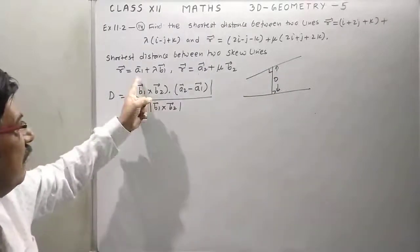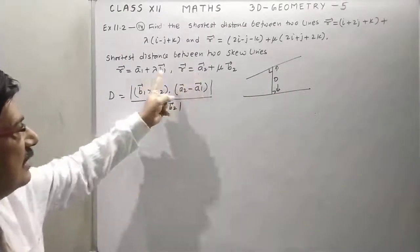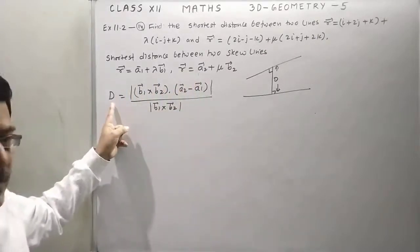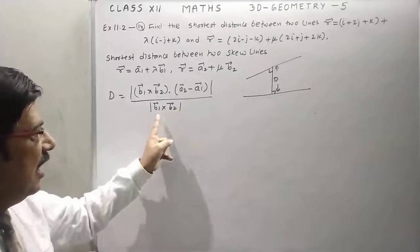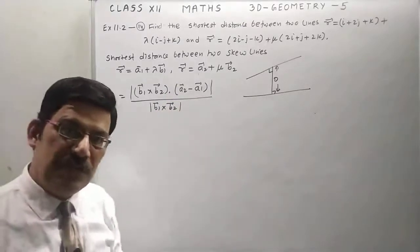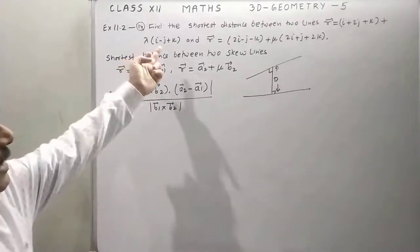Suppose vector equation of two lines are given, this and that, and the distance between them is equal to b1 cross b2 dot (a2 minus a1) upon magnitude of b1 cross b2.